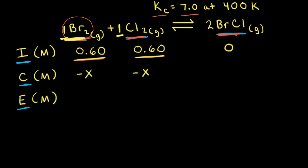When Br2 and Cl2 react together, we lose our reactants, and that means we're going to gain some of our products. To figure out how much, we need to look at mole ratios. The mole ratio of bromine to BrCl is one-to-two. Therefore, if we're losing x for Br2, we must be gaining 2x for BrCl. So I can go ahead and write plus 2x under BrCl.